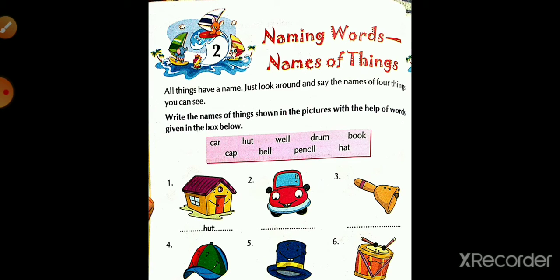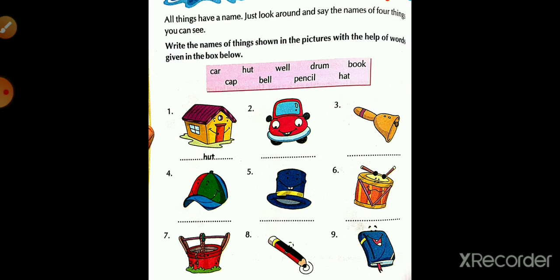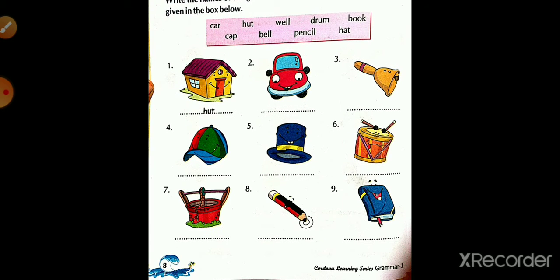Now we look at the pictures below. The first picture — look carefully — it is a picture of a hut: H-U-T, hut. The second one — whose picture is it? Car: C-A-R, car.